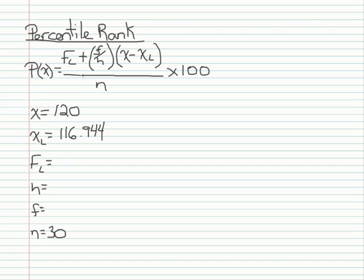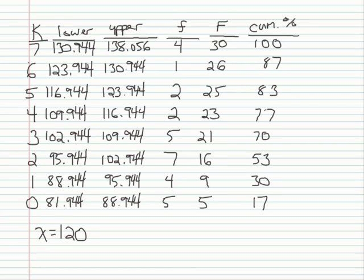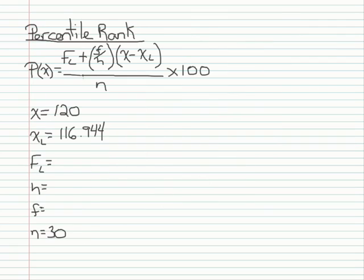Next I need to find f sub l, which is the frequency of scores below x sub l. So I go back to the interval that contains my point, and I need the frequency of scores below that interval. And that's going to be 23. So f sub l is going to be 23.